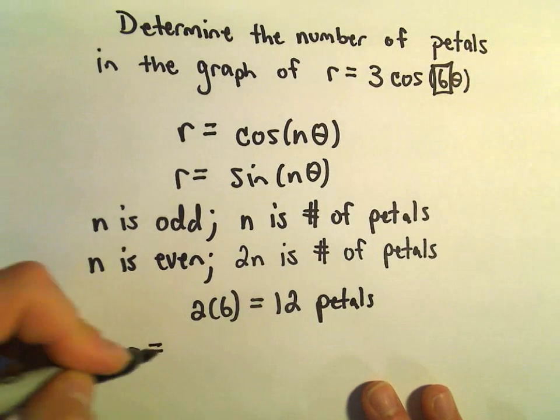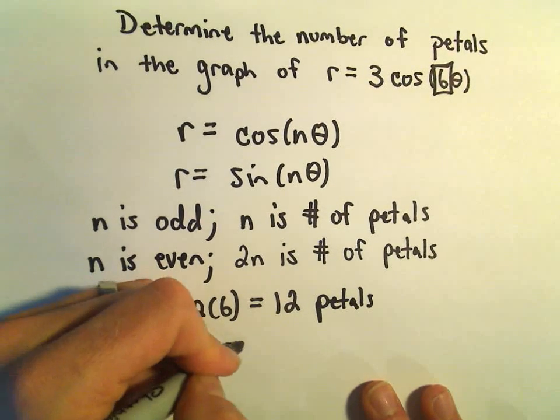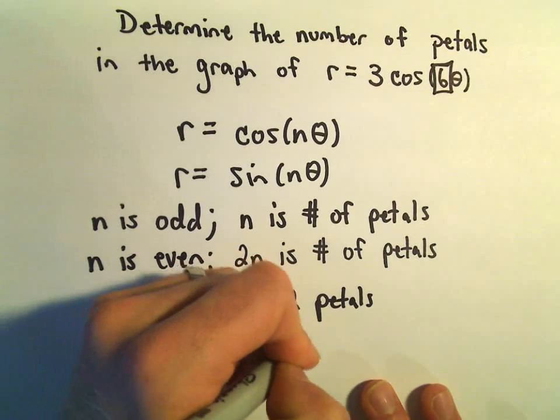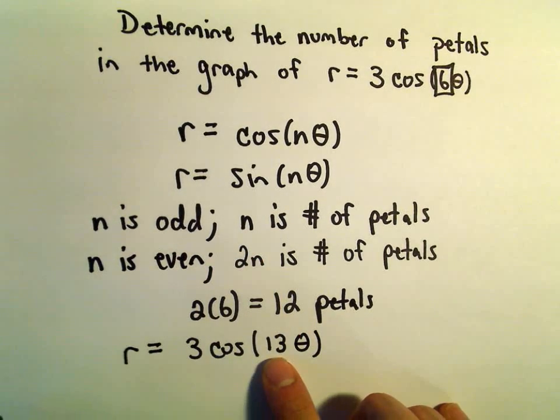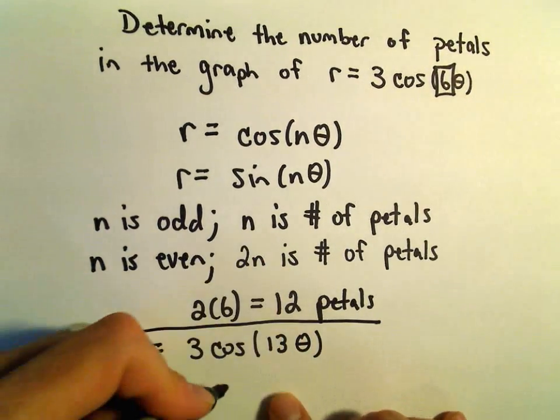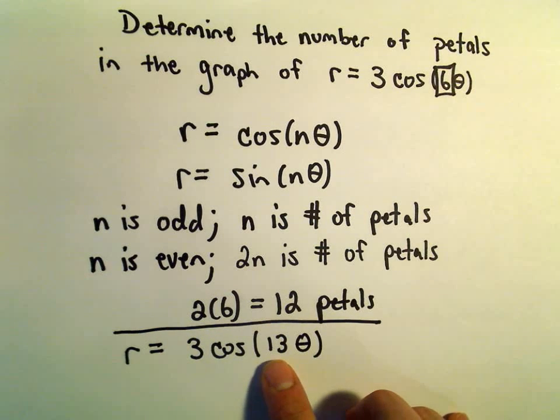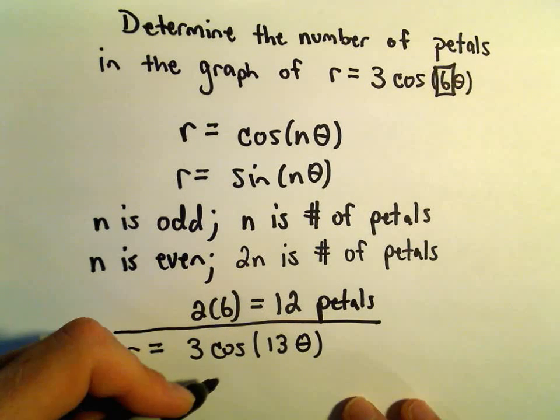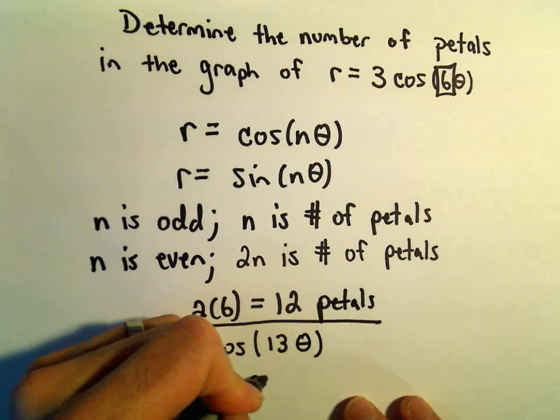If our problem had been, say, r equals 3 cosine of 13 theta, well, 13 is odd. In this case, if we had 13 theta, we would have 13 petals total.